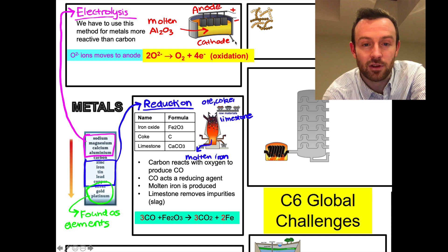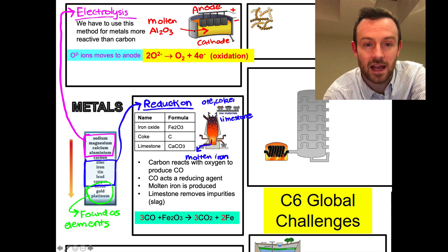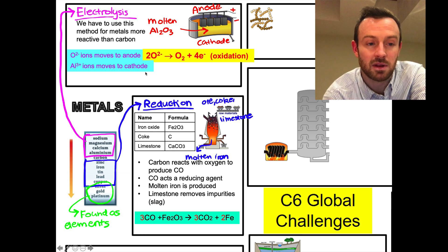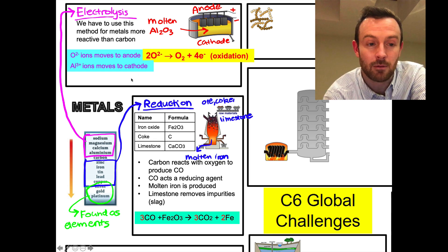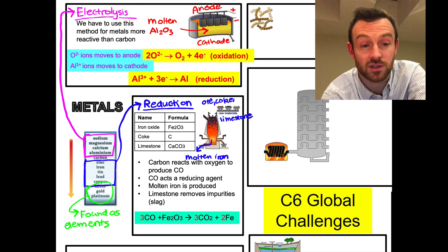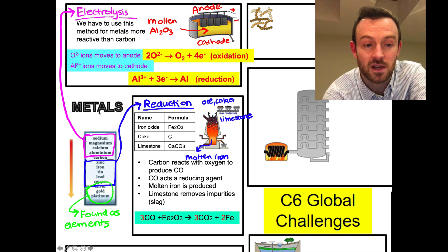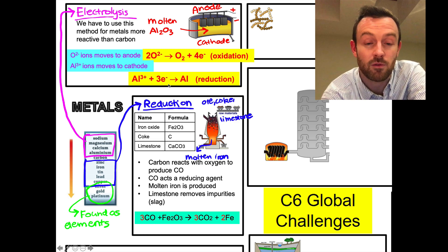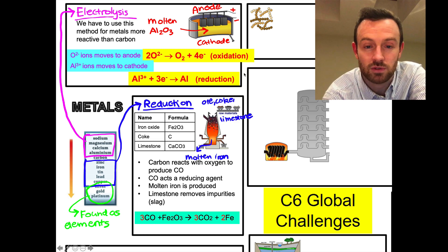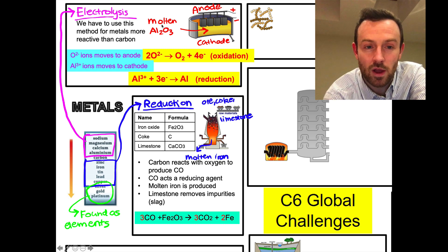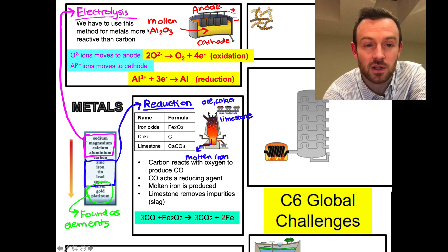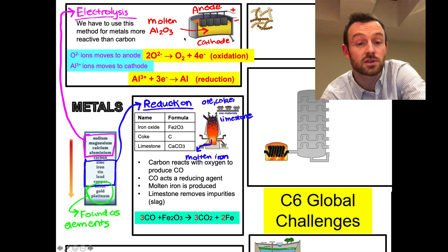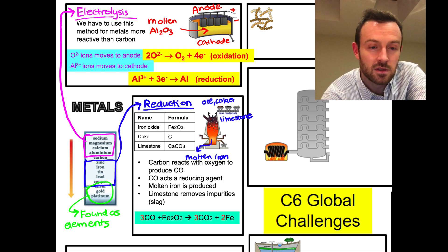So what happens at the cathode, which is the negative electrode? So the outside of this reaction vessel is negatively charged - that's the cathode. At the cathode, it's the aluminium ions that move to the cathode. They're Al3+ ions, and when they get there they need to pick up some electrons to be reduced. They're aluminium 3+ ions, so they pick up three electrons and they form aluminium metal. And that's called reduction. This process requires the aluminium oxide to be molten, and that's so that the ions can move freely past each other. If it was solid, the ions are in a fixed position.